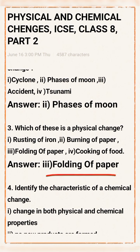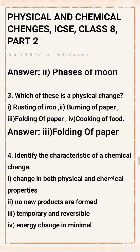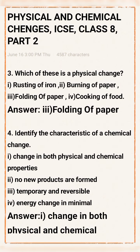Question 4: Identify the characteristics of a chemical change. Option 1: Change in both physical and chemical properties. Option 2: No new products are formed, temporary and reversible, energy change is minimum. Answer: Option 1 — Change in both physical and chemical properties is the correct answer.